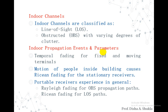Indoor propagation events and parameters include temporal fading for fixed and moving terminals — how temporary fading can occur whether a transmitter or receiver is fixed or moving. The motion of people inside the building causes Rayleigh fading for stationary receivers, since people living and moving inside the building cause fading even for receivers fixed at a particular location.